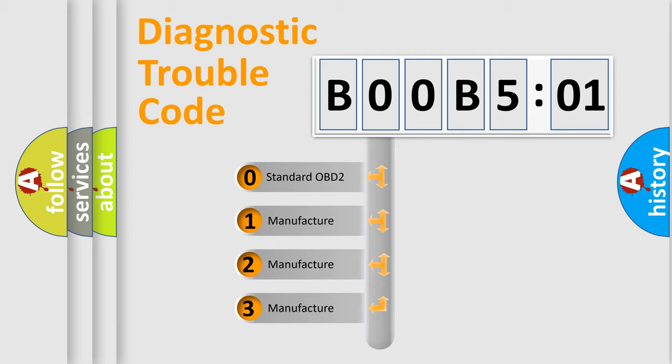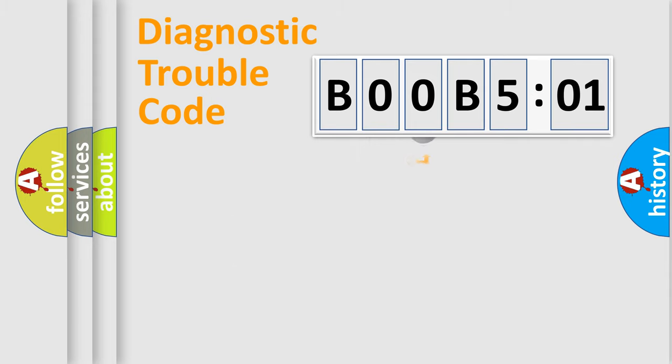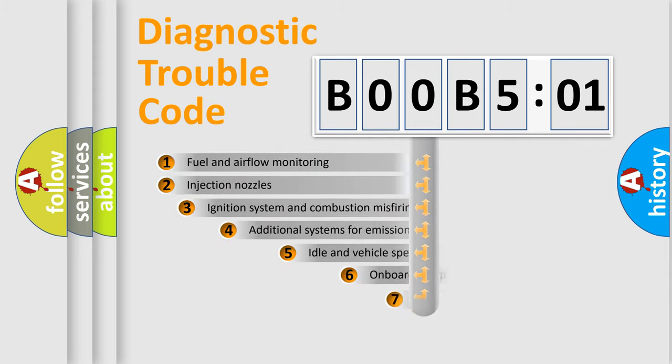If the second character is expressed as zero, it is a standardized error. In the case of numbers 1, 2, 3, it is a manufacturer-specific expression of the car-specific error.